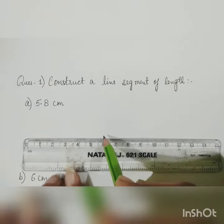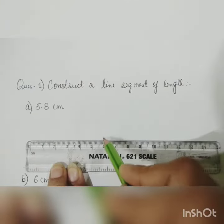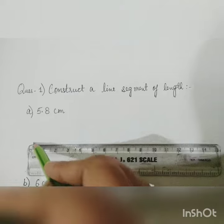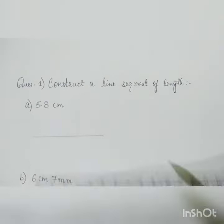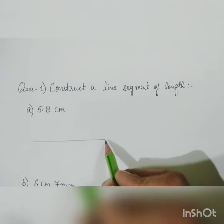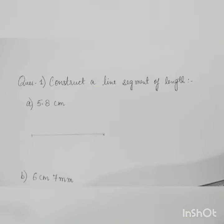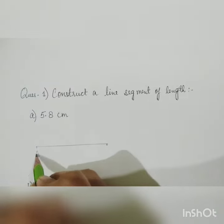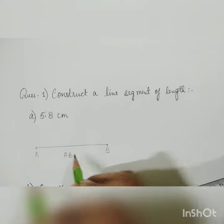See, this is your 8, from here to here, from 0 to 5.8. Now see, you can give any name: AB, PQ, XY. So we can write here AB. So AB is equal to 5.8 centimeter. So this is the line of 5.8 centimeter. Now next, see the b part.